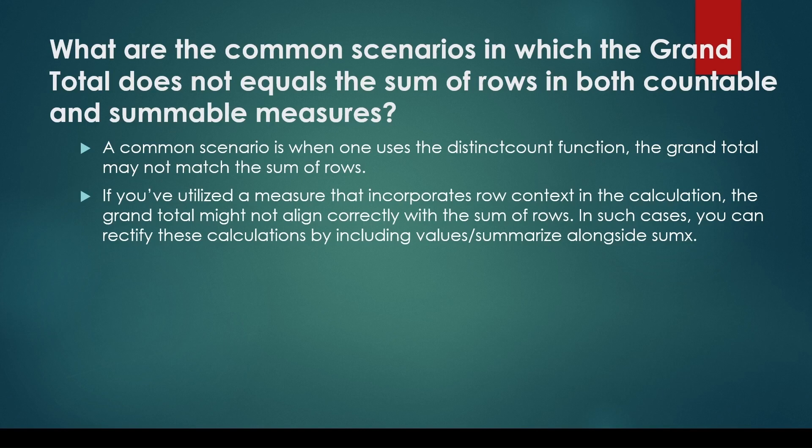The total might not match when you use a measure with row context or time intelligence. Time intelligence formulas often utilize row context, which can lead to differences. If you have a formula like column equal to max of column, which uses row context, the grand total calculation will not have access to the same row context, resulting in a mismatch between the grand total and the sum of your rows.